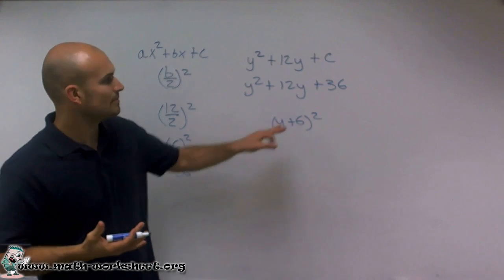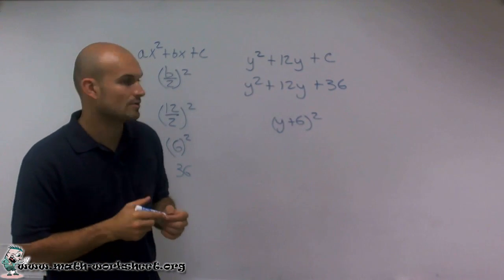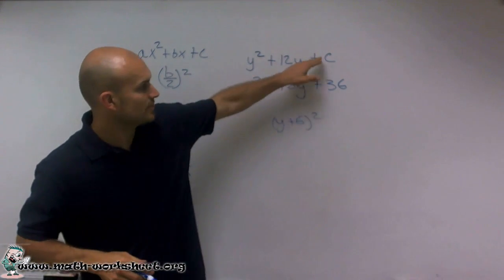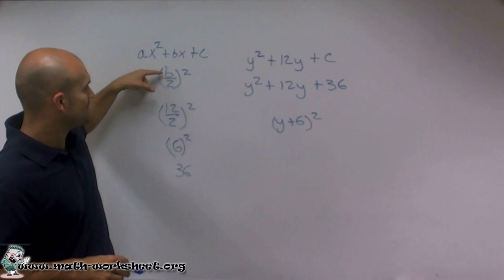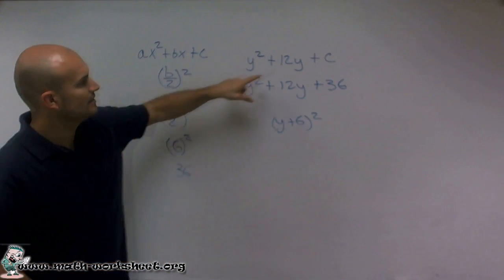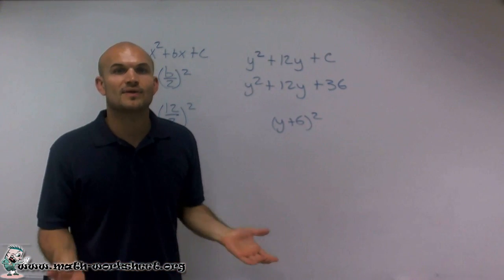But for right now, this problem just asks us what is our value of c to complete the square. And all I need to do is take my b divided by 2, square it, and I get c equals 36. All right. That's it. Thanks.